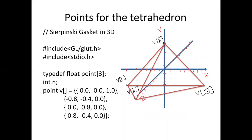First we will visualize the Sierpinski gasket as a tetrahedron. The tetrahedron consists of four points — that means four triangles: three triangles on one triangular base. To start the program, we include the GLUT header file and the stdio.h header file, and then we declare an array which will hold three points — that means x, y, z values.